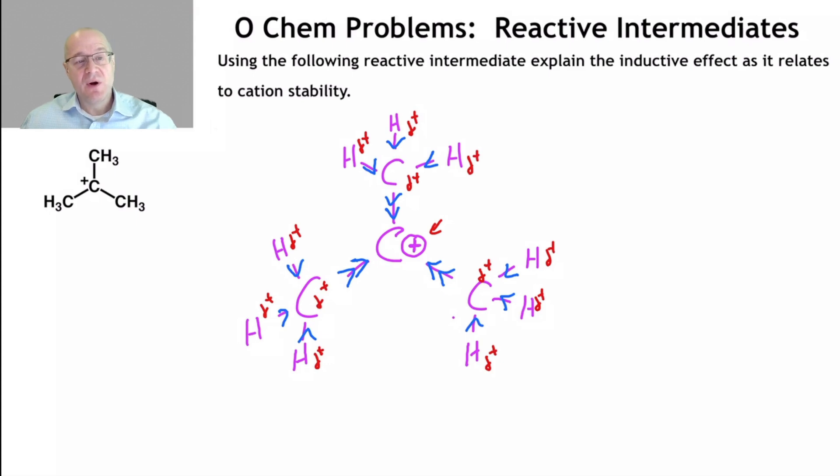So now we all know that tertiary carbocations are more stable than secondary and primary and methyl. And this is one of the reasons. The other reason is hyperconjugation. Induction is the other reason. The carbocation can pull electron density from its neighbors, which means that this carbocation is slightly less attractive to a nucleophile, slightly less attractive, because now the plus charge is being distributed out and spread over a larger area or volume. Larger volume is more correct, I would think. It's being spread over a larger volume.